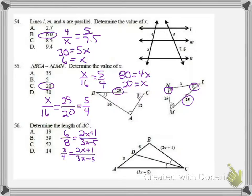So I get 3 times 3X minus 5 equals 4 times 2X plus 1. We get 9X minus 15 equals 8X plus 4. I subtract 8X from both sides, I've got an X. If I add 15, add 15, I get a 19.